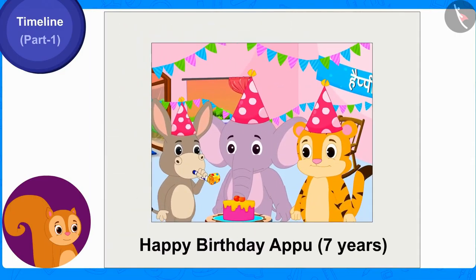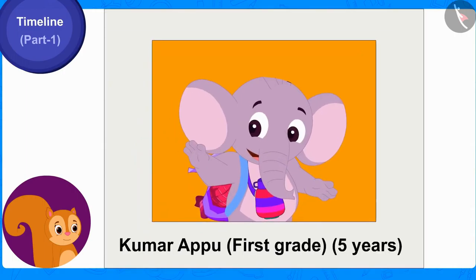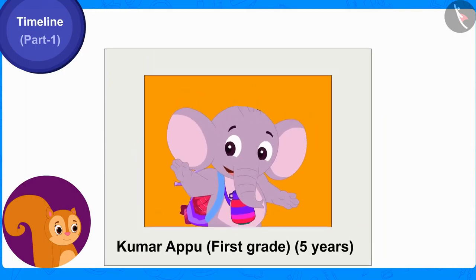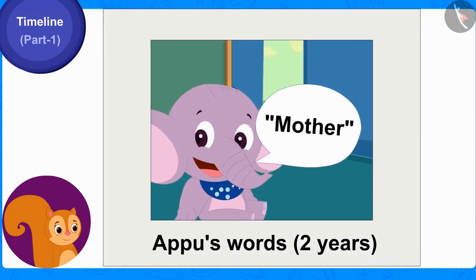In this picture, Appu is celebrating his seventh birthday. In this one, Appu was in first grade. This picture was taken when Appu was one year old and his parents had taken him on a trip to Abu. And this last picture was taken when Appu first started speaking the word 'mother' at the age of two.